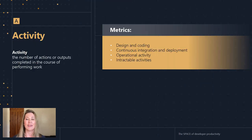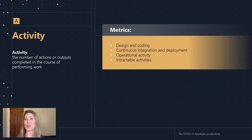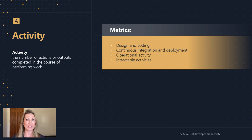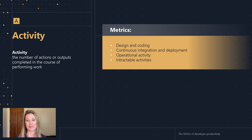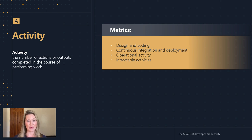Next up, activity. So often when we think about productivity, we immediately think about activity. Activity is a count — it's the number of things that get done: lines of code, number of pushes, number of commits, number of pull requests. We're halfway through the framework and now we finally get to activity. It's because activity is a valuable measure to look at, but it's not the only one. The activities that developers perform in their work are complex and diverse. But it's not the only thing that's important when we think about productivity.